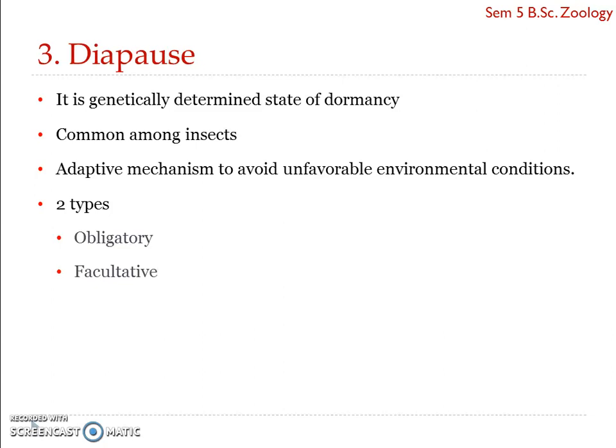This phenomenon is found among arthropods, especially insects, and it permits the organism to survive unfavorable environmental conditions or seasonal situations. Diapause is a unique adaptive mechanism for surviving extreme climatic conditions like low winter temperature or extreme summer heat.